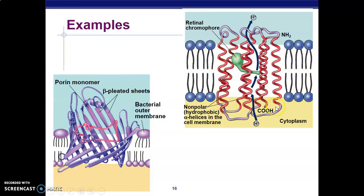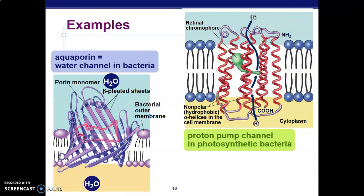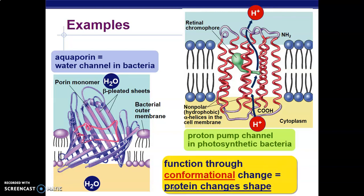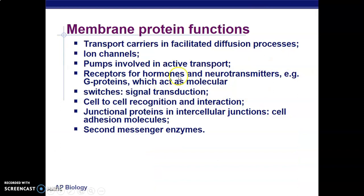Proteins in the membrane may act as water channels or proton pump channels depending on which membrane or cell is being discussed. The main functions of cell membrane proteins are: transport through facilitated diffusion, acting as ion channels, acting as pumps for active transport, forming receptors for hormones and neurotransmitters such as G proteins, causing signal transduction, enabling cell-to-cell recognition such as antigens on cell surfaces, and forming junctional proteins in intercellular junctions. Within the cell, they also act as second messenger enzymes.